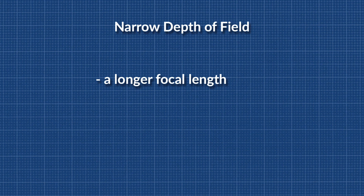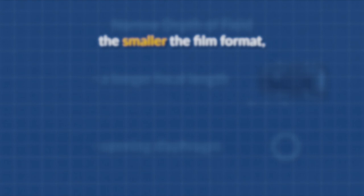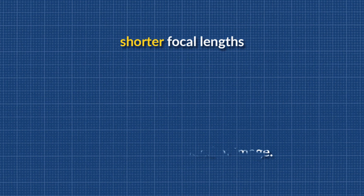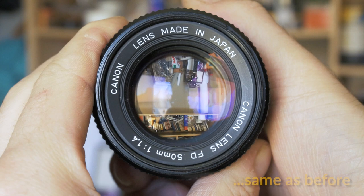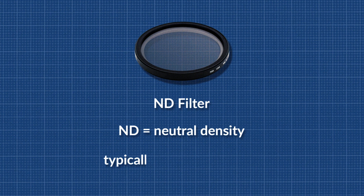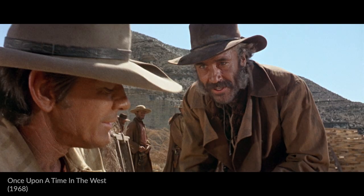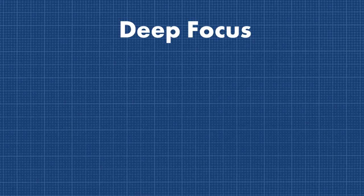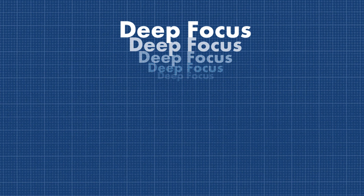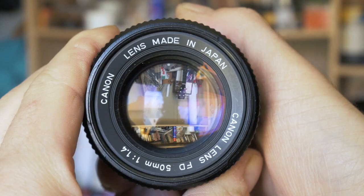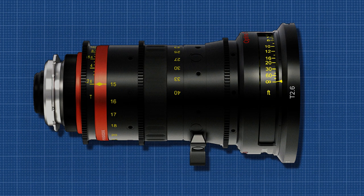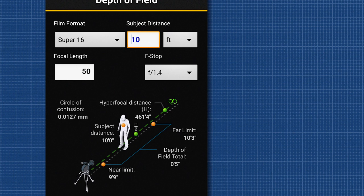You need to remember that the smaller the film format, the shorter the focal length of the lens to get the same kind of image. Since shorter focal lengths have a deeper depth of field at the same f-stop, you need to open your diaphragm and/or choose a longer focal length to achieve a similar result. You can also have everything in focus when foreground and background are equally important. For a deep depth of field, also called deep focus, you need a shorter focal length and/or to close down your f-stop. To know exactly where to focus, you can use a depth of field calculator app, found in the free Kodak Cinema Tools app.